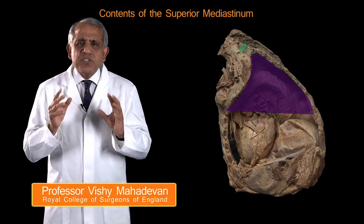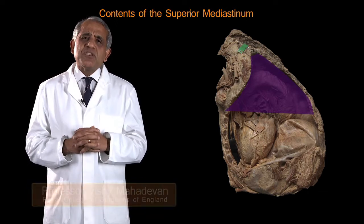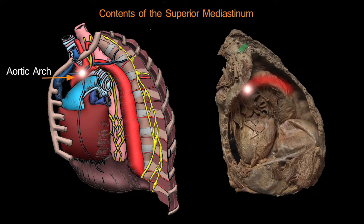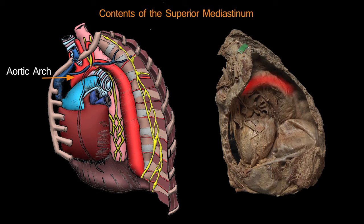In the superior mediastinum, much the most important structure is the aortic arch. The entire aortic arch is in the superior mediastinum from start to finish. The aortic arch gives rise to three important branches, so the origins of these branches are clearly in the superior mediastinum.